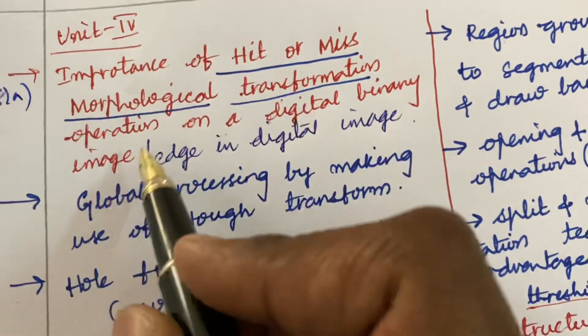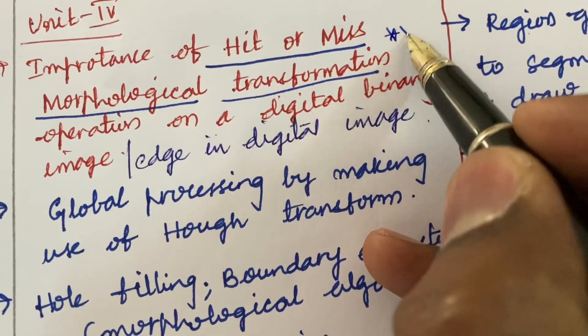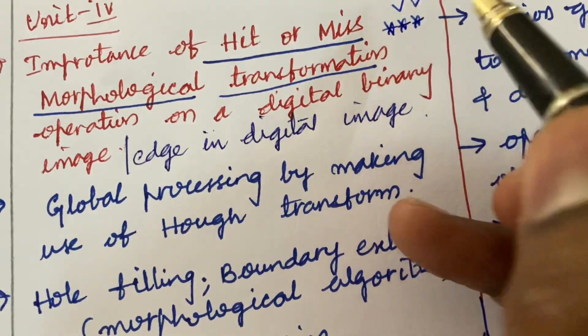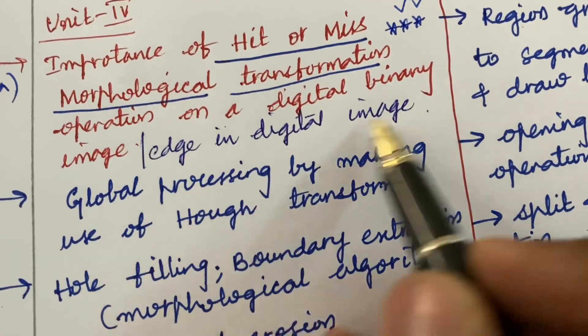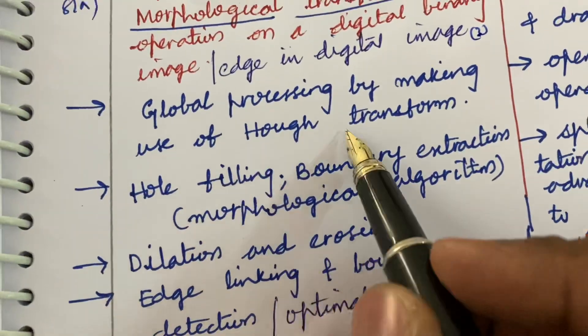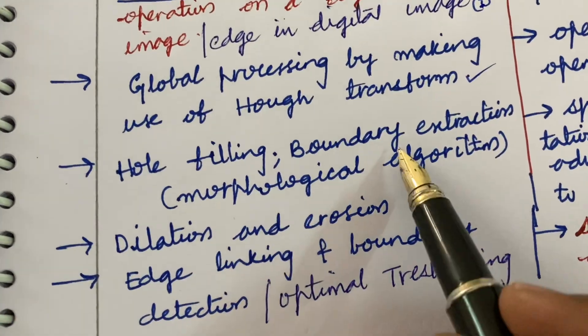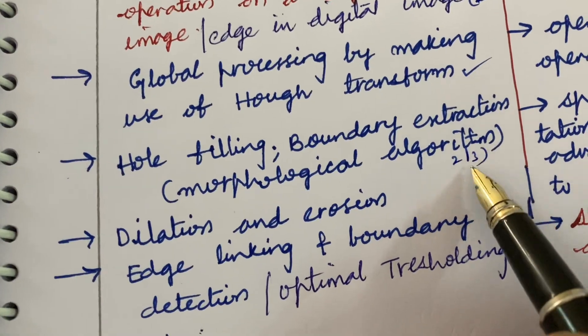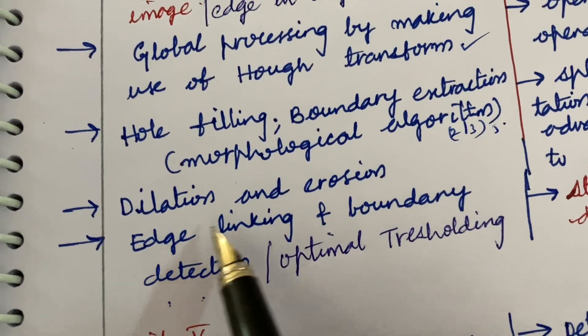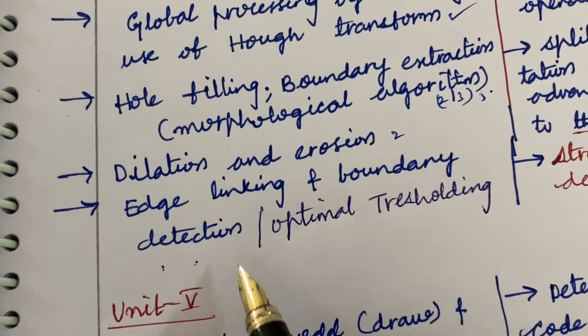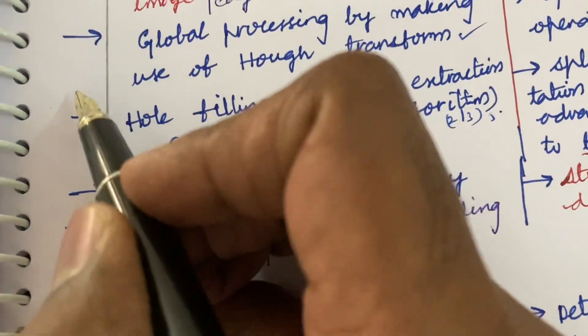Now 8A is importance of hit or miss morphological transformation related to it. The 8th question is a damn sure question. Operation on digital binary image and edge in digital image may be a 3 mark question. Global processing by making use of Hough transform and the hole filling, boundary extraction using morphological algorithm may be a 2 mark, 3 mark question or a 5 mark question sometime. Dilation and erosion is a 2 mark question. End linking and boundary detection and optimal threshold may be a 2 or 3 mark question.